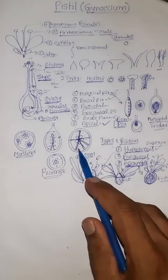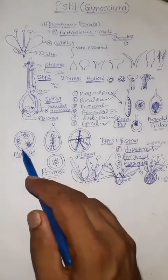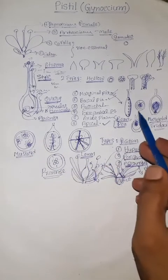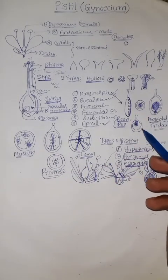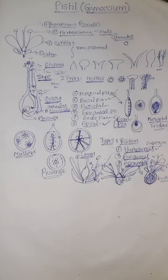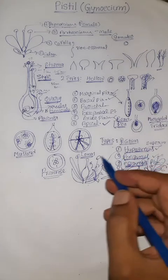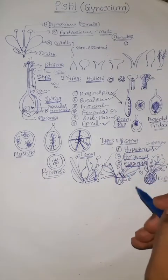In examinations, you may be asked: What is epigynous? What is hypogynous? What is perigynous? What is axial placentation? What is free central placentation? What is parietal, marginal, basal, or apical placentation? These are all very important topics for two-mark questions.